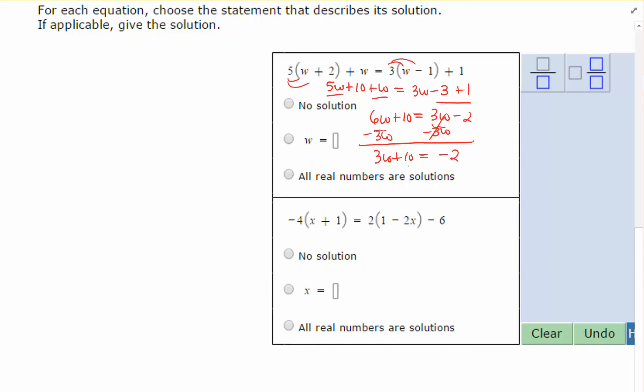So if the letters don't cancel, you do get a solution. So I have 3W is equal to negative 12. When I divide by 3, W is equal to negative 4. So I would enter in W equals negative 4, and I would check that answer.